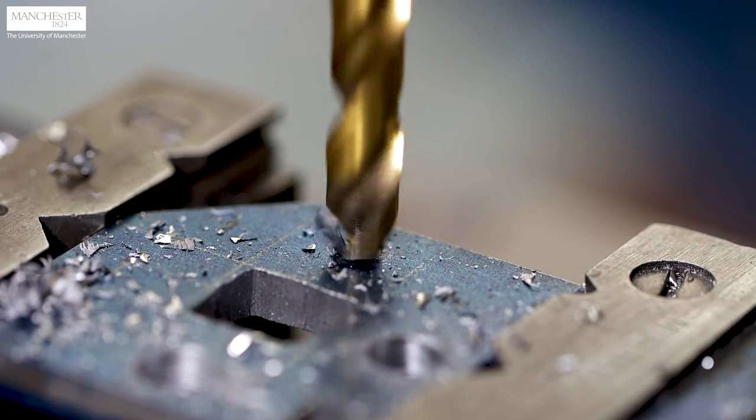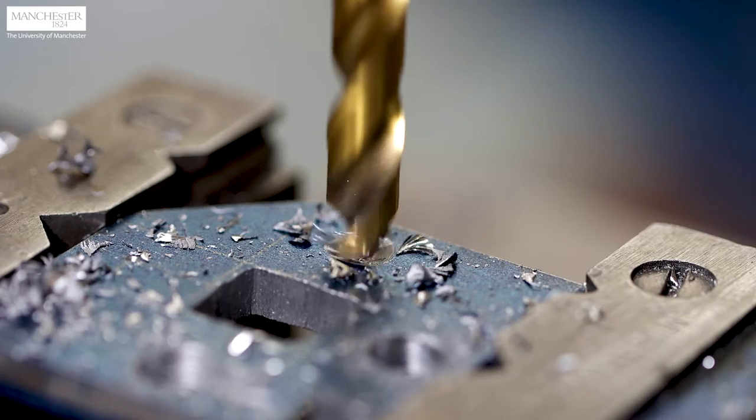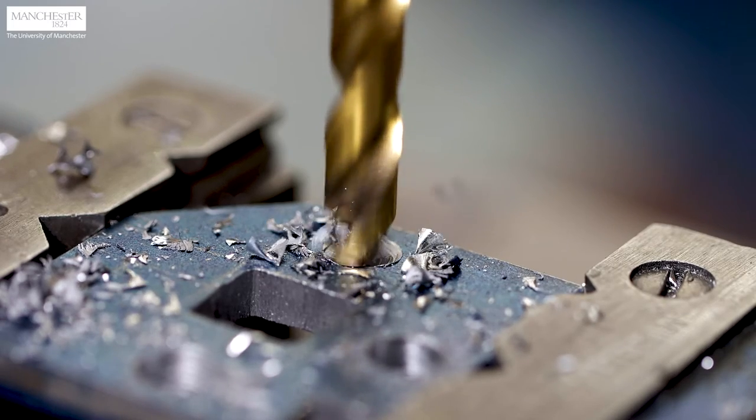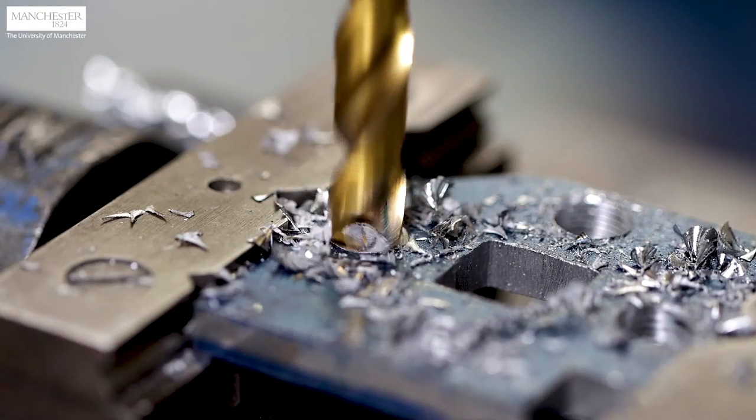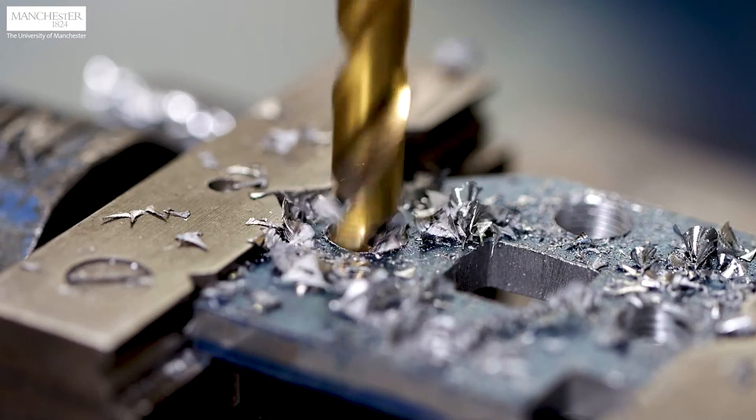Drill the two small holes by an 8.5mm drill bit. These holes will be later tapped. Drill the two larger holes by a 10mm drill bit.